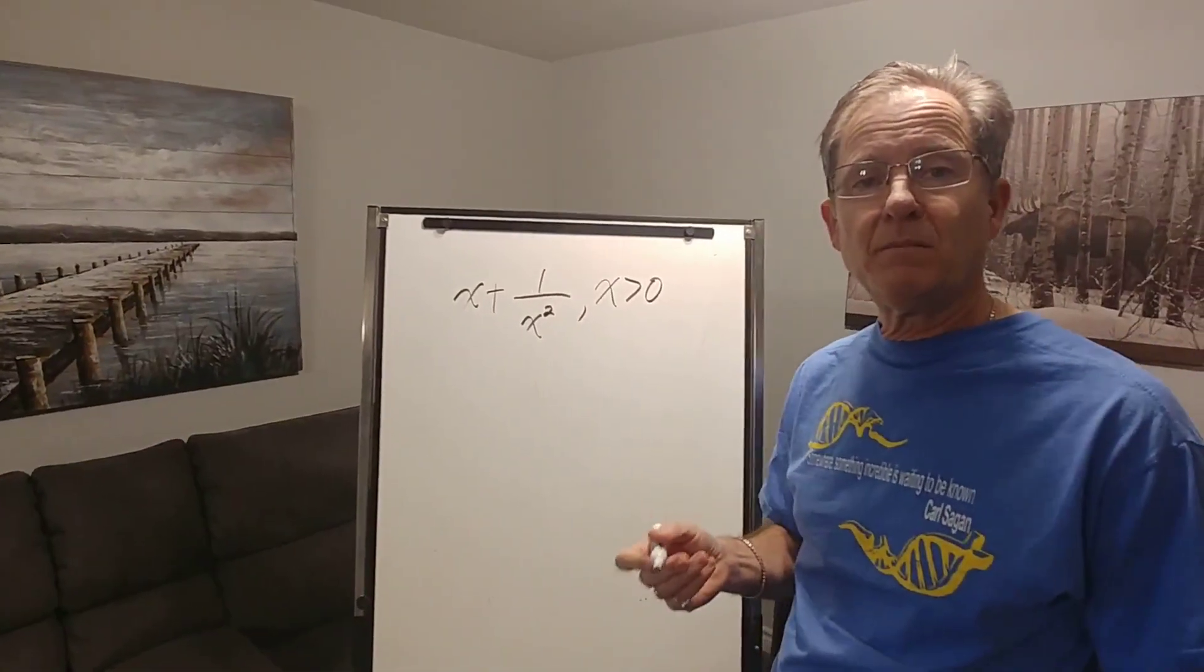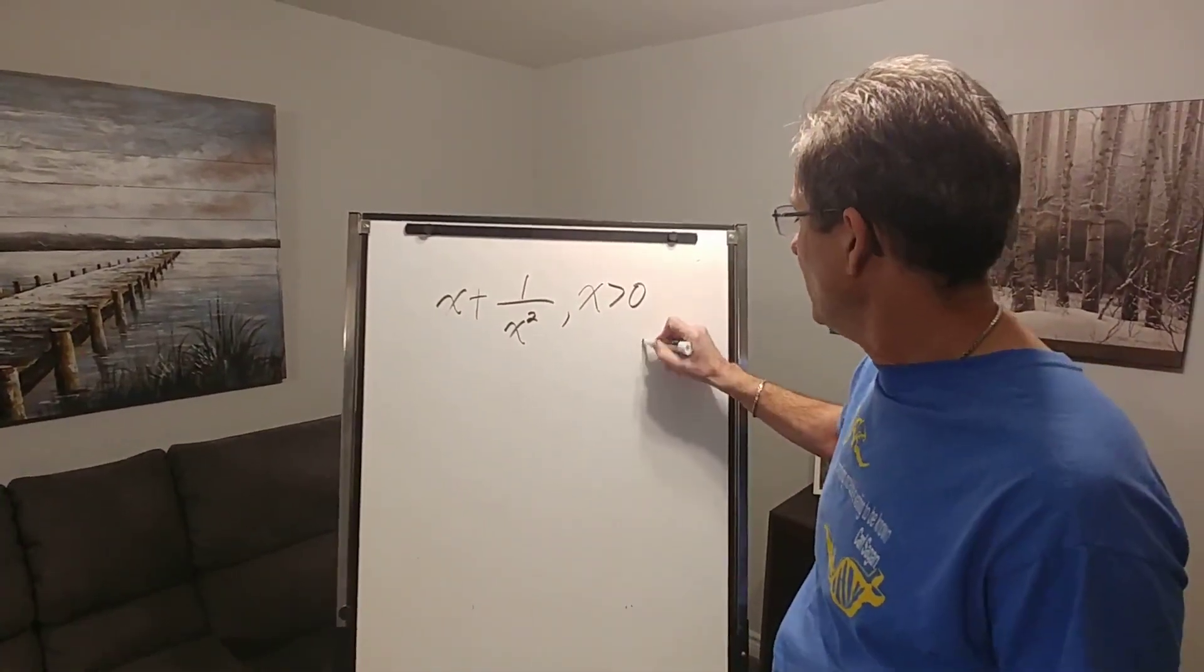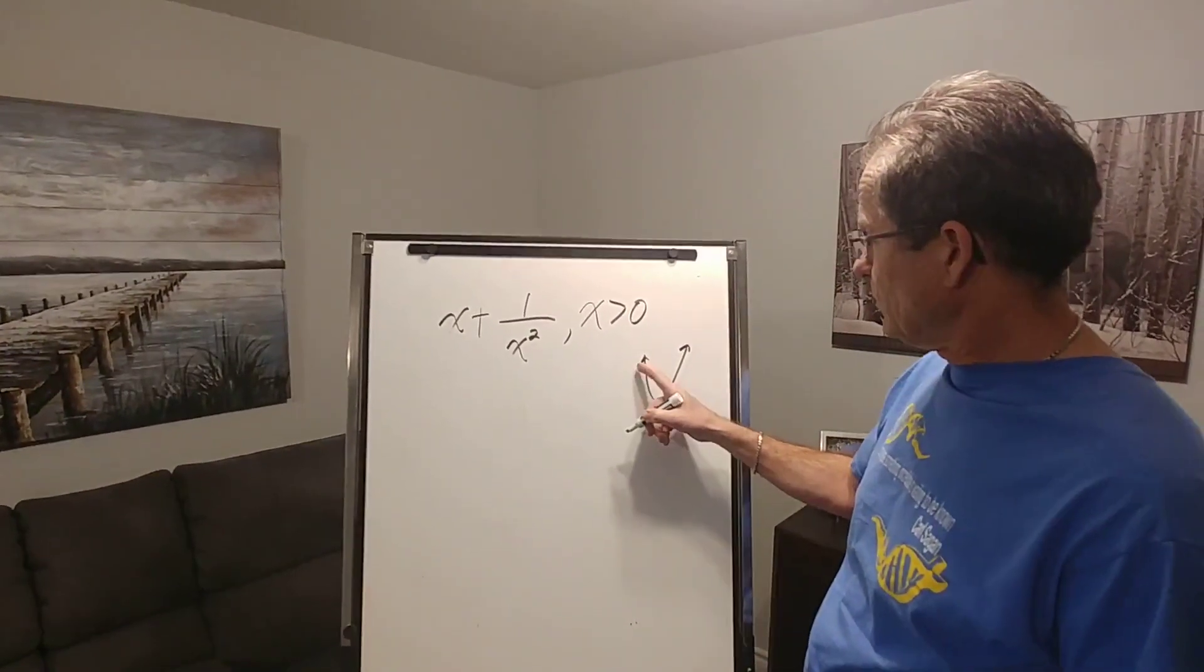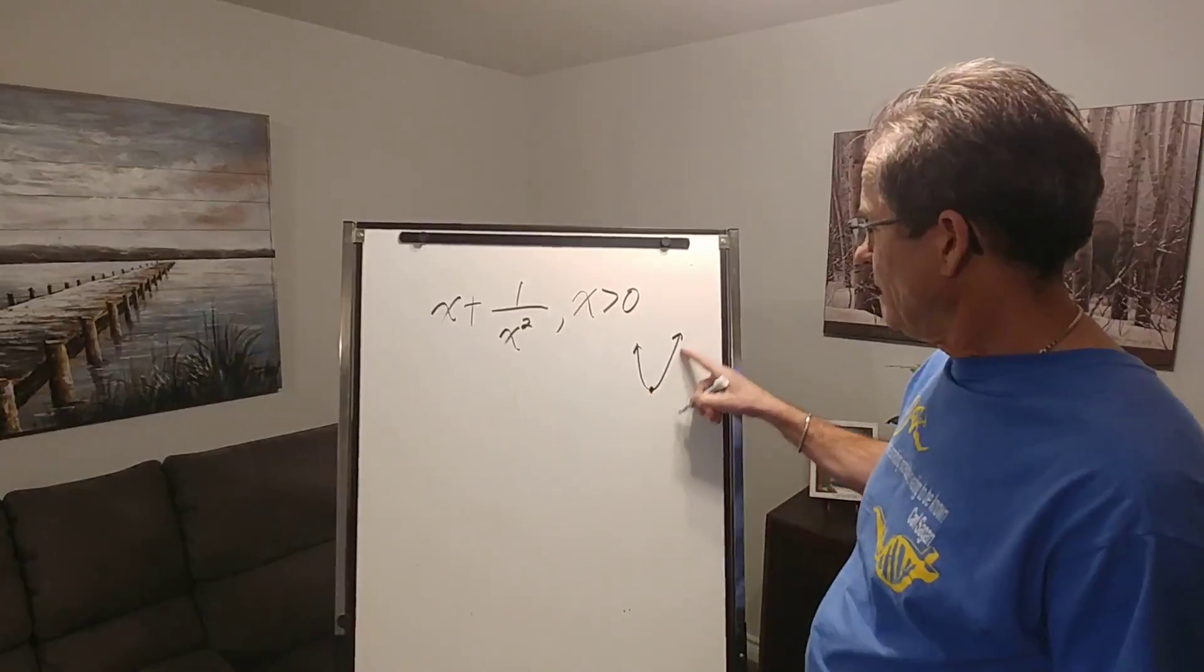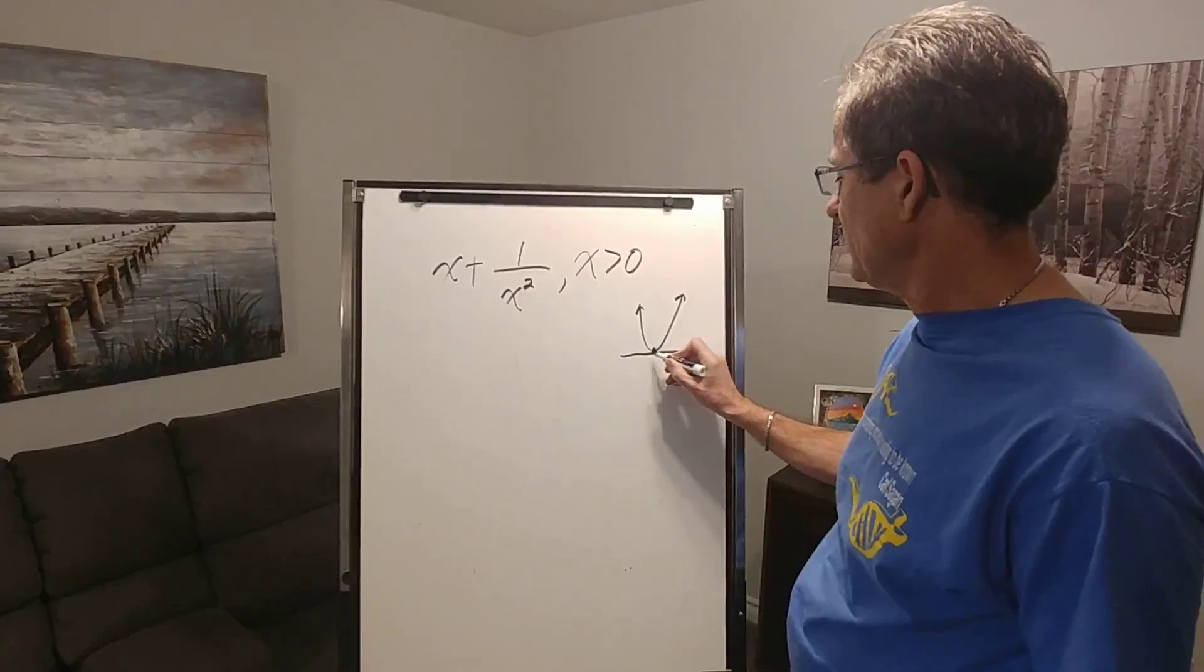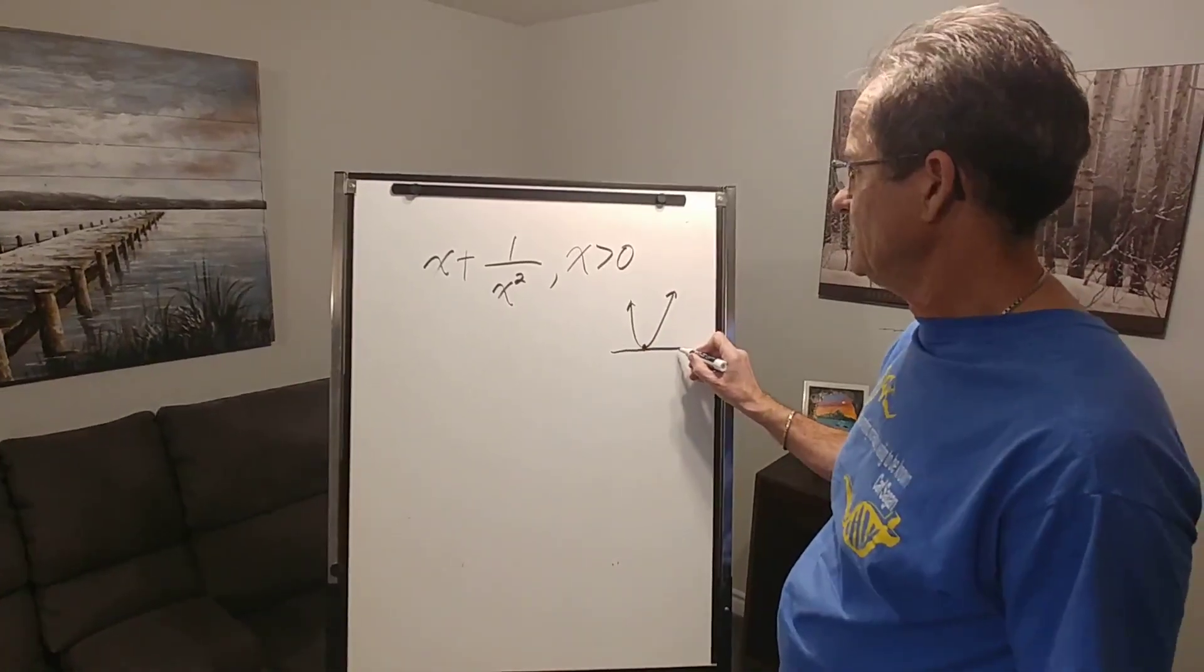First of all, what do they mean by a minimum? Well let's look at a very simple graph. This is the minimum point. The slope goes from negative to positive. So at this point the slope must be zero because if I draw a tangent to the graph at that point, the slope of that line is zero.